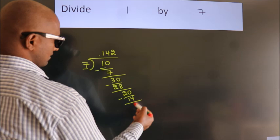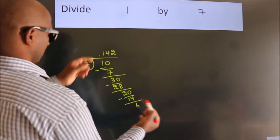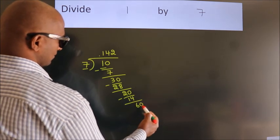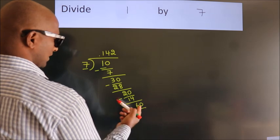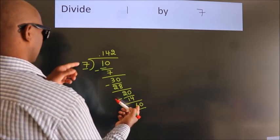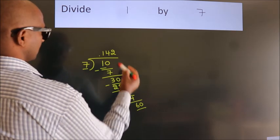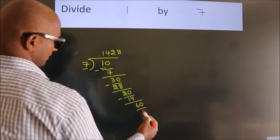After this, we already have the decimal. So, directly take 0. So, 60. A number close to 60 in 7 table is 7, 8s, 56.